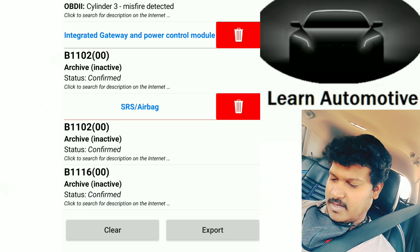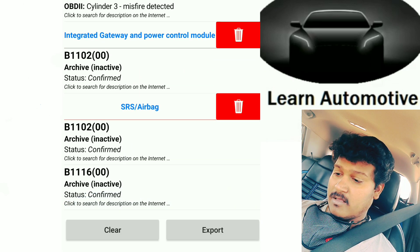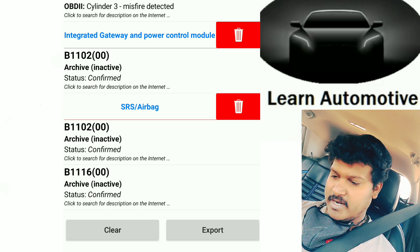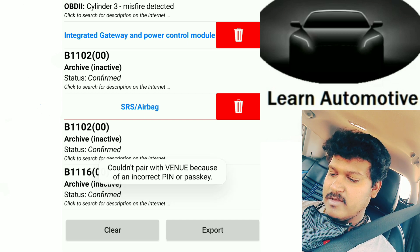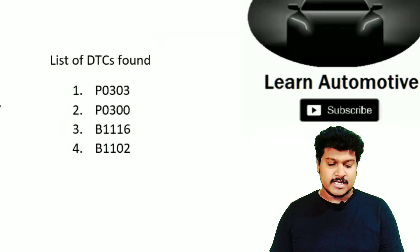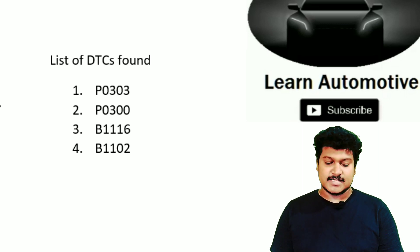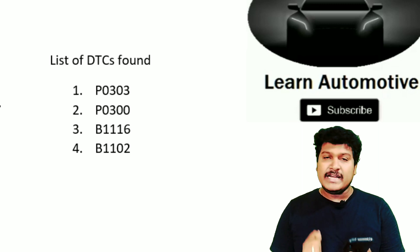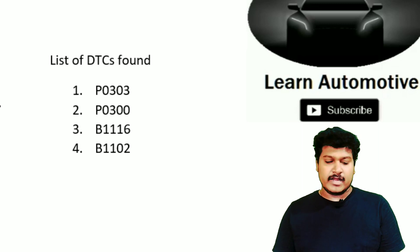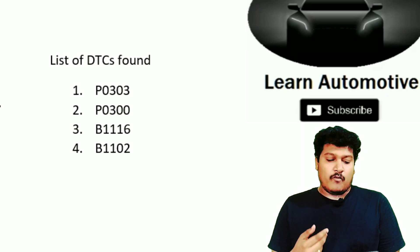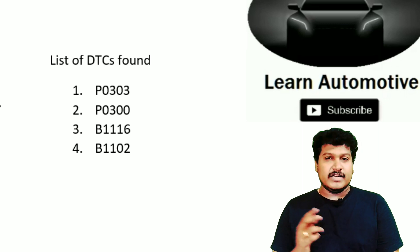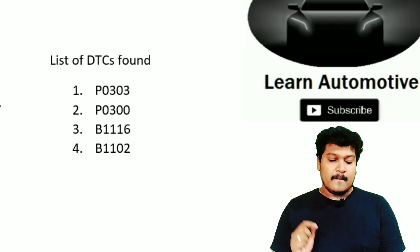Across 50 modules we have one, two, three — two confirmed DTCs. We can see SRS airbag codes B1166 and B200 mentioned. Let me list out all the DTCs we found. We have four DTCs: P0303, P0300, B1116, and B210. These are all four DTCs found. Let's see what the severity and root cause of these DTCs are and whether we can handle them ourselves or need to take the car to a garage.